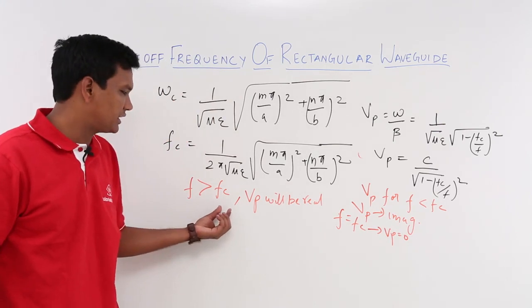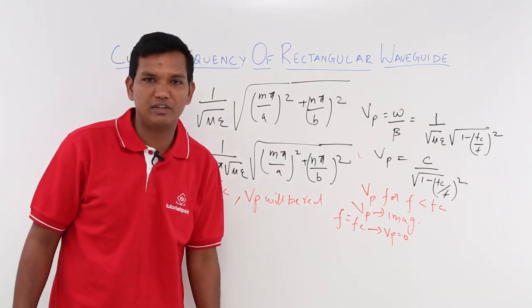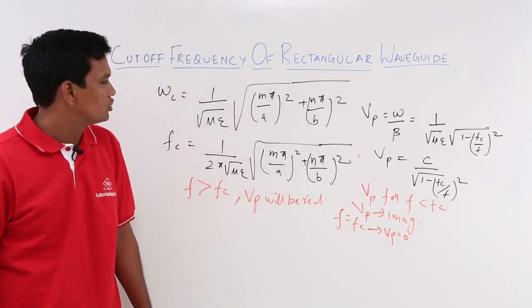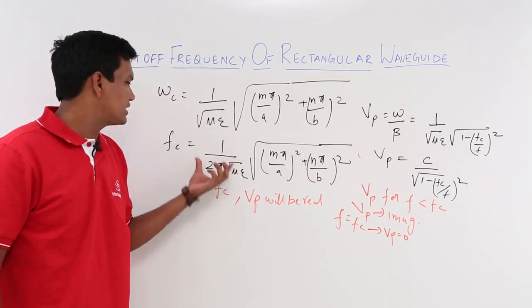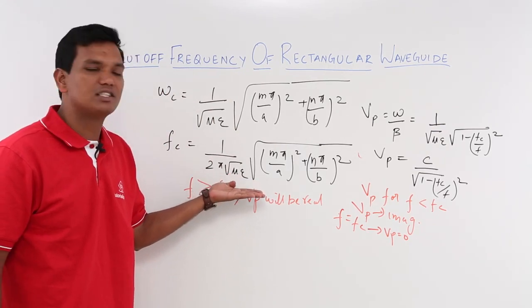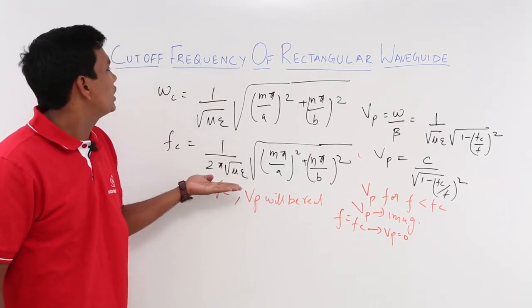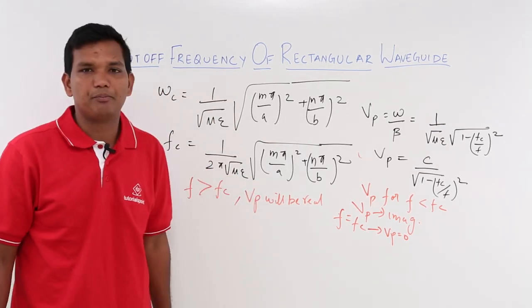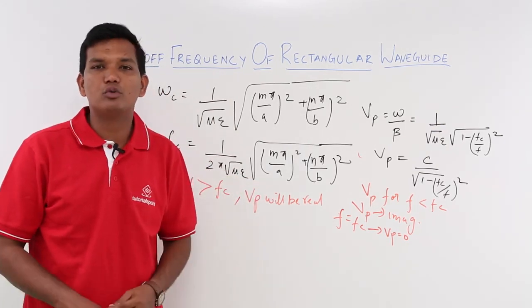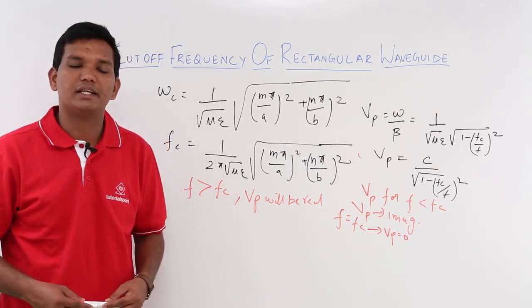If f is greater than f_c, only then will your phase velocity exist. This expression gives you the cutoff frequency. We will see how to solve numerical problems related to this in the next videos.